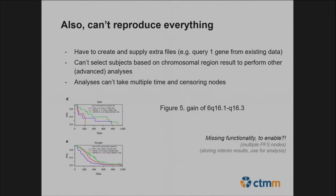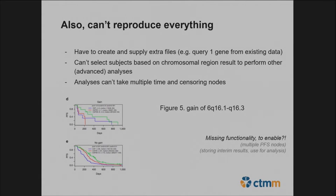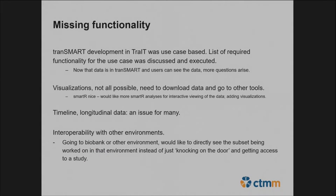You can't select subjects based on a chromosomal region result from another analysis — you would have to re-upload the results as new data and then try the analysis. There is apparently something that could be stored in Transmart but it's not available yet. For instance, in figure five of the article we have results for a chromosomal region with progression-free survival for three different treatment arms, but we cannot drag three progression-free data nodes into one analysis — there is some missing functionality.